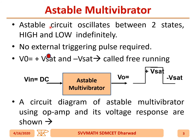The astable multivibrator circuit oscillates between two states — high and low — indefinitely. No external trigger pulse is required. It will simply move from +Vsat to -Vsat, and -Vsat to +Vsat. This is the reason it is called free-running. The input to the astable multivibrator is DC.